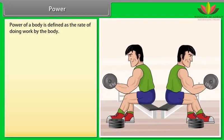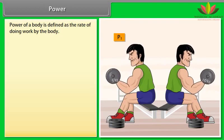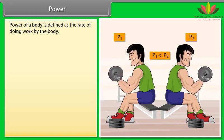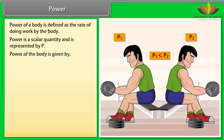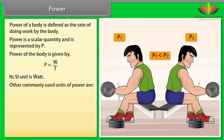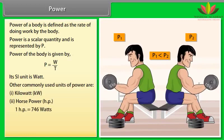Power. Power of a body is defined as the rate of doing work by the body. Let us take an example. A boy doing exercise by using dumbbell. When he used the dumbbell of 5 kg, then he applied power P1. And when he used the dumbbell of 10 kg, then he applied power P2. Hence the power rating is high when he used the dumbbell of 10 kg as compared to the dumbbell of 5 kg. Power is a scalar quantity and is represented by P. Power of a body is given by P is equal to W upon T. Its SI unit is watt. Other commonly used units of power are kilowatt and horsepower. One horsepower is equal to 746 watts.